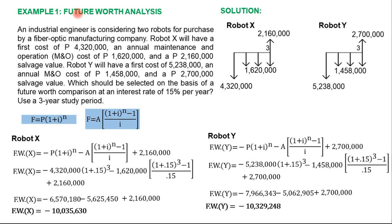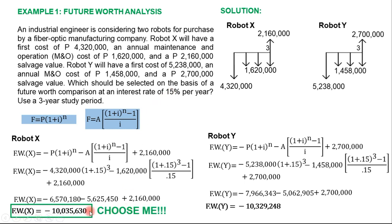In summary: when the result represents expenses, choose the alternative with the lower cost; when it represents revenue, choose the alternative with the greater profit. This applies to future worth, present worth, annual worth, and all other engineering economic analyses. Therefore, for this problem, Robot X is selected, as it has the lower future cost of 10,035,630 compared to Robot Y's 10,329,248.